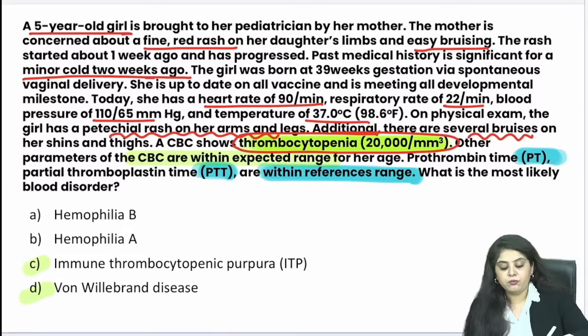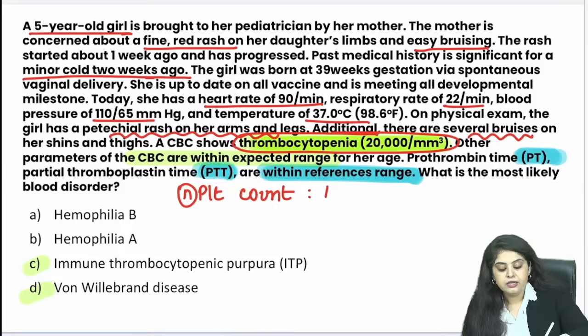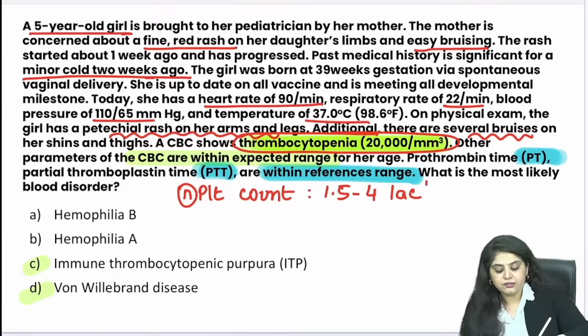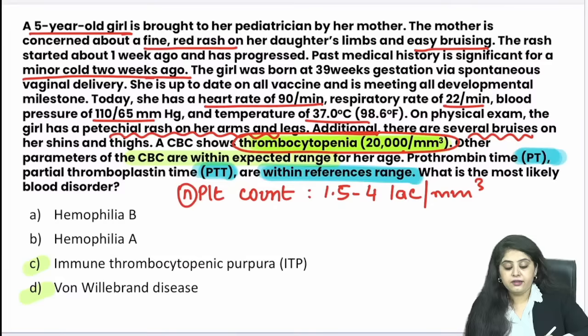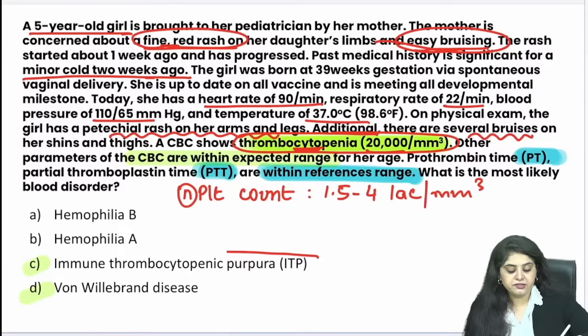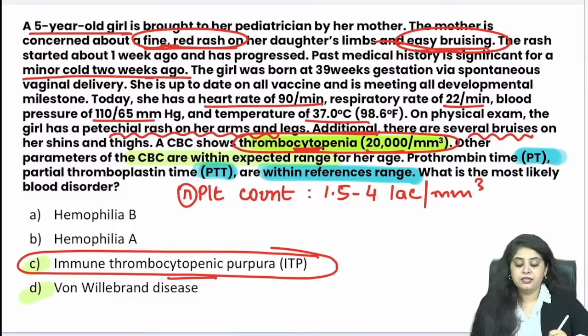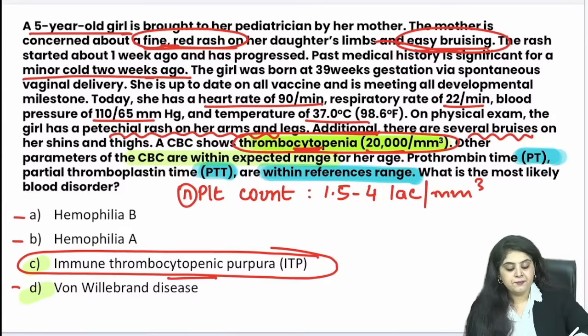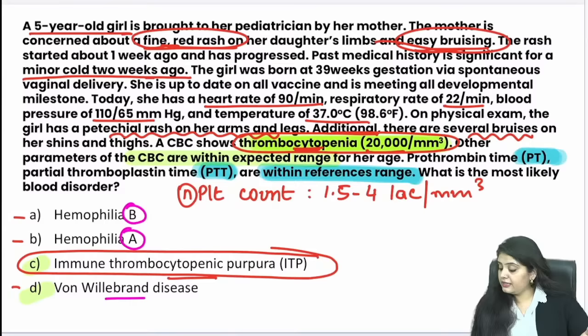Normal platelet count is 1.5 to 4.5 lakhs. Here it is 20,000 — thrombocytopenia — so of course there will be bleeding and bruising. The diagnosis is immune thrombocytopenic purpura (ITP). Should I have considered haemophilia A, B, and von Willebrand disease? Yes, because there is bruising. But in all of these, APTT should be elevated. Here, APTT is totally normal — only the platelet count is the problem — so ITP it is.